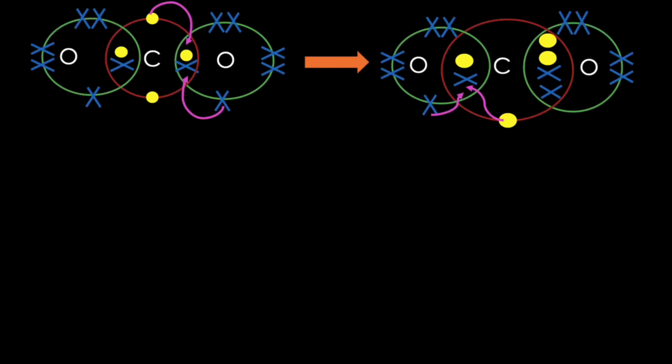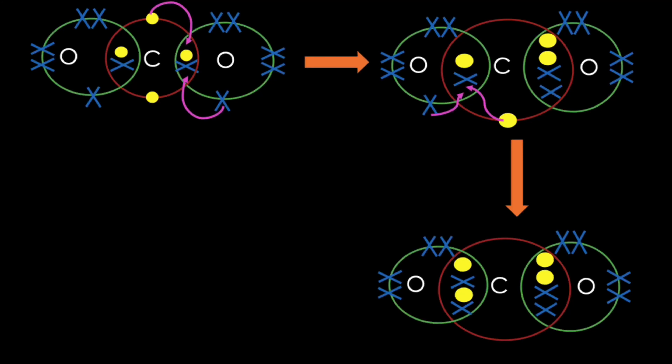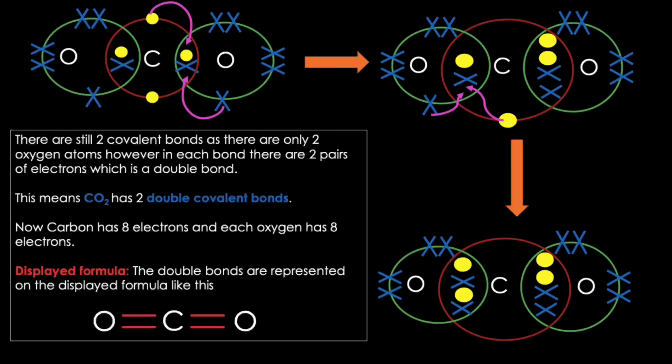So the electron from carbon is shared with the oxygen on the left, and the electron from oxygen is shared with the carbon. Now both oxygen atoms are sharing two pairs of electrons with the carbon atom — this forms a double bond. There are two covalent bonds as there are two oxygen atoms overlapping carbon, but in each bond there are two pairs of electrons, making carbon dioxide have two double covalent bonds. Carbon now has eight electrons and each oxygen atom has eight electrons, so no more sharing of electrons is required.